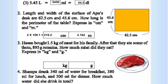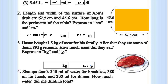Hassan got 1.5 kg of meat for his family. After that, they ate some of it — 905 grams. How much meat did they eat? 1500 minus 905: 1500 minus 900 is 600, so it will be 595 grams.